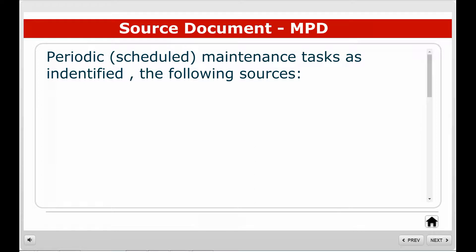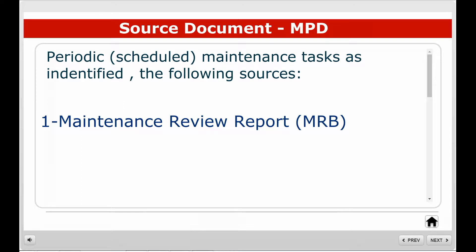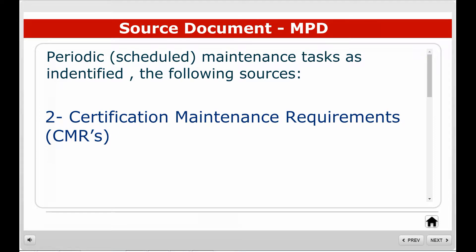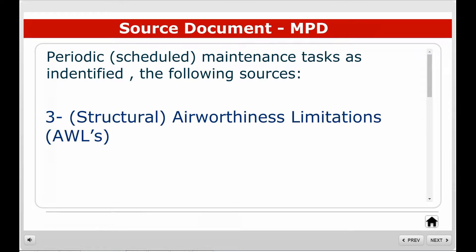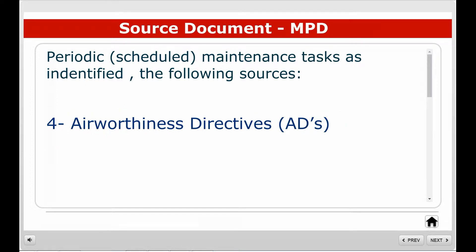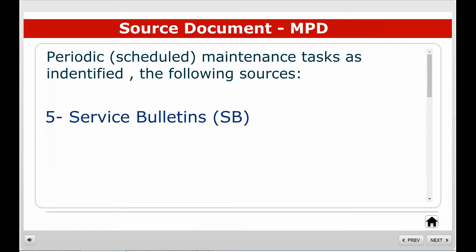Periodic scheduled maintenance tasks as identified in the MPD will include, but not be limited to, the following sources: 1. Maintenance Review Board, 2. Certification Maintenance Requirements, 3. Structural Airworthiness Limitations, 4. Airworthiness Directives, 5. Service Bulletins, 6. Service Letters.